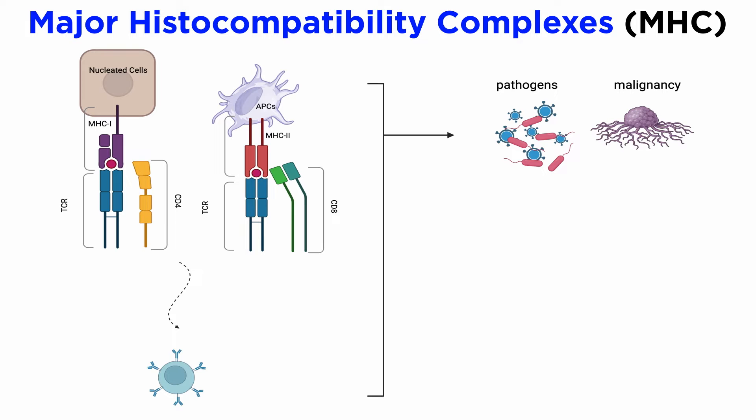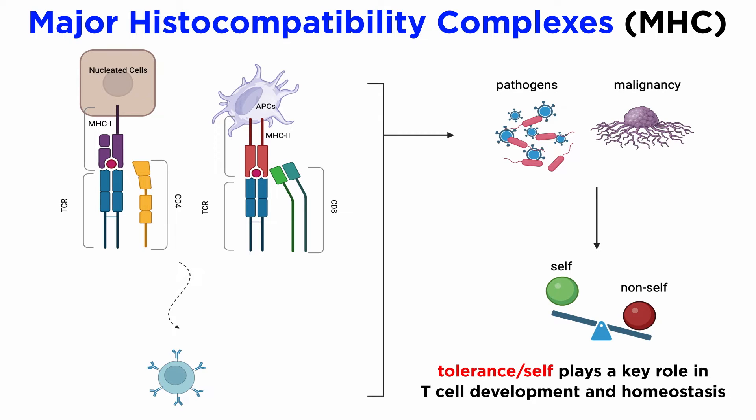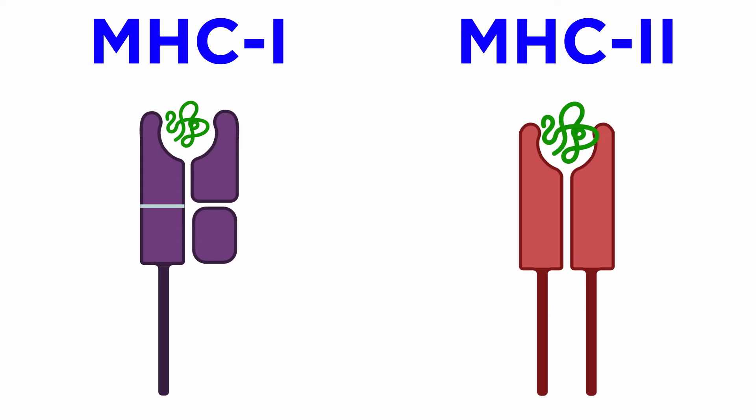Any undesirable pathogens such as viruses and bacteria, or mutations that contribute to malignancy, can be detected. Thus, defining the concept of tolerance and self plays a key role in not only thymic T-cell development and selection, but also in homeostasis.